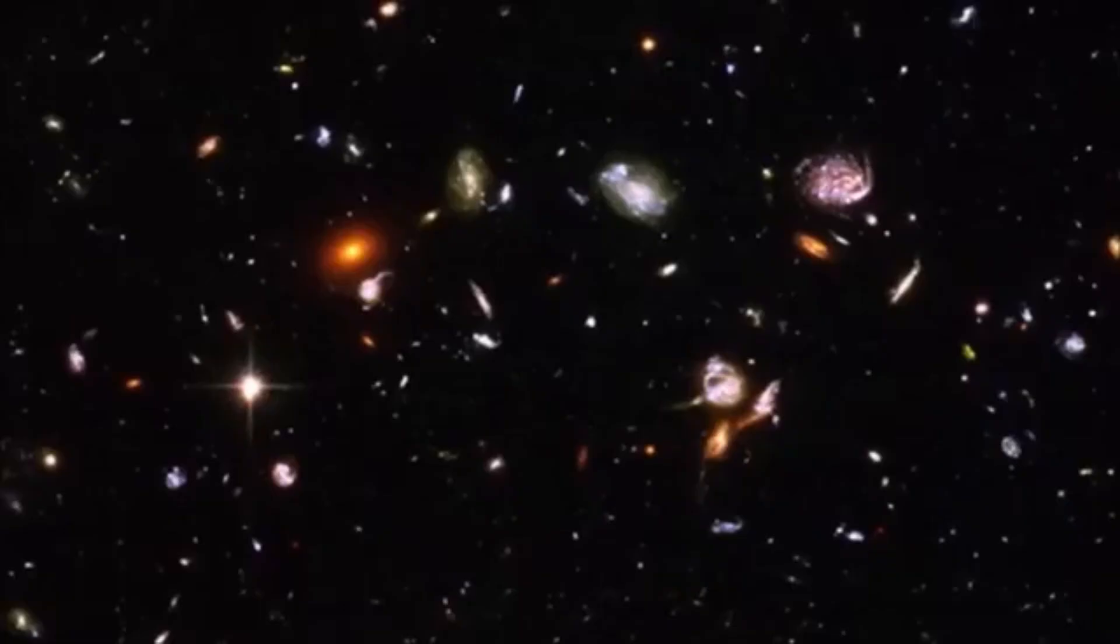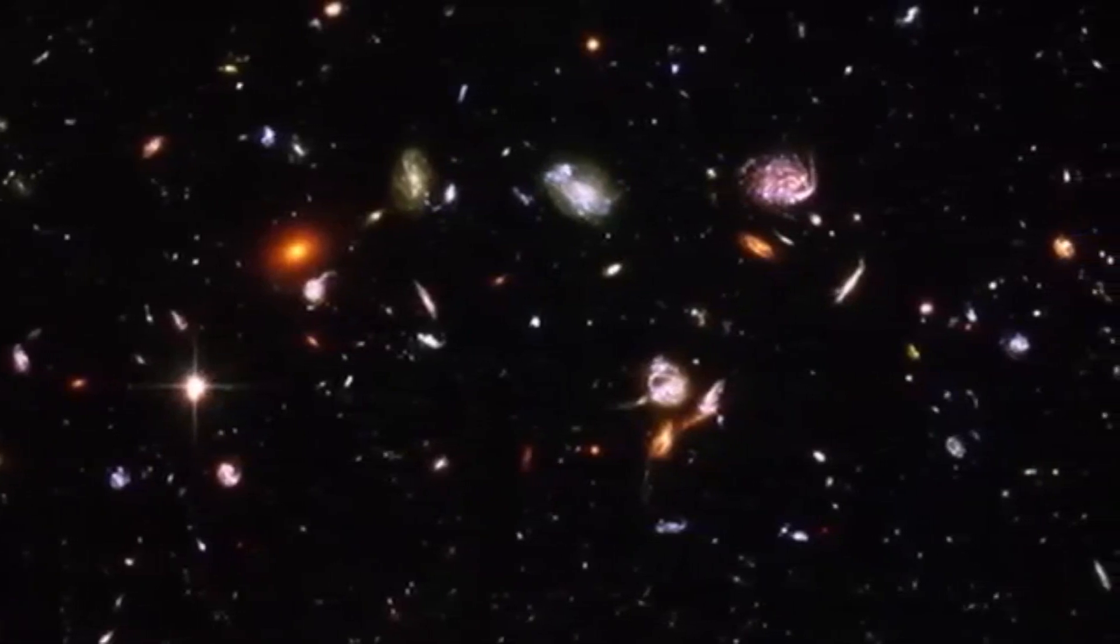Initially the universe should have been relatively uniform, with structures like stars, galaxies, and clusters of galaxies gradually forming and evolving over time. In the past, the universe was hotter, preventing the formation of stable neutral atoms.